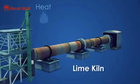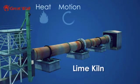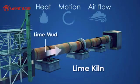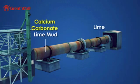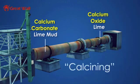A lime kiln uses heat, motion, and air flow to convert lime mud to lime, or in chemical terms, calcium carbonate to calcium oxide. This process is referred to as calcining.